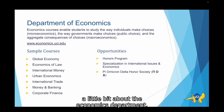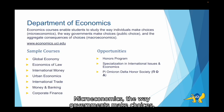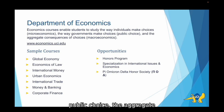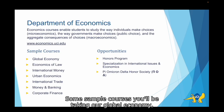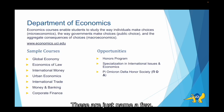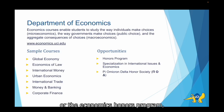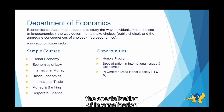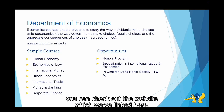Now we're going to talk a little bit about the Economics Department. At UCI, the Department of Economics is focused on the study of the way individuals make choices (microeconomics), the way governments make choices (public choice), and the aggregate consequences of choices (macroeconomics). Some sample courses you'll be taking are Global Economy, Economics of Law, International Money, and Urban Economics — just to name a few. Some opportunities within the department are the Economics Honors Program, the Specialization of Internationalization Issues in Economics, and the Honors Society Pi Omicron Delta. If you have any questions about any of these opportunities, you can check out the website which we've linked here.